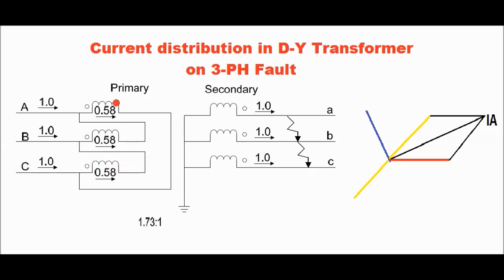Due to the flow of 0.58 ampere in each phase winding, the line current will be root 3 times the phase current. So the line current will be 1 ampere for the red, yellow and blue phase respectively. This is the fault current distribution for the delta-star transformer for a three-phase fault.